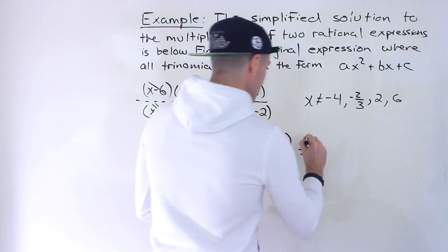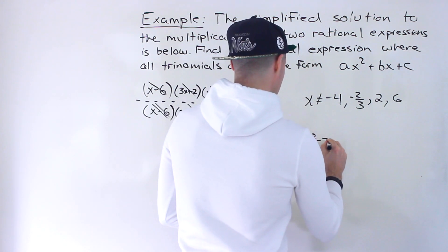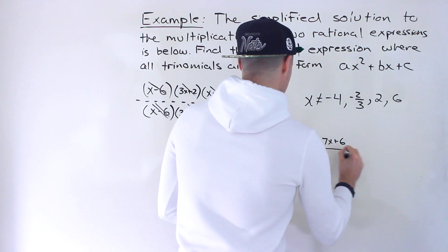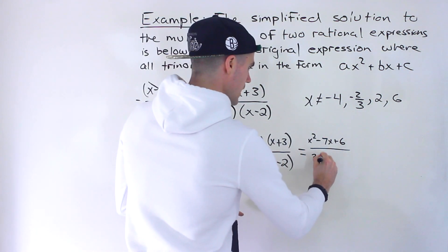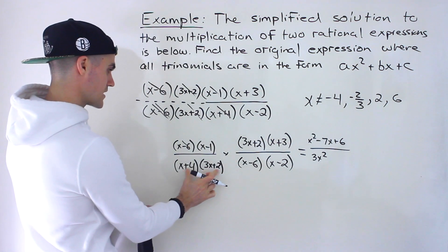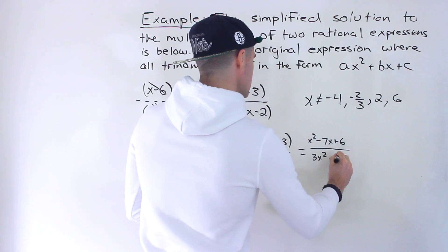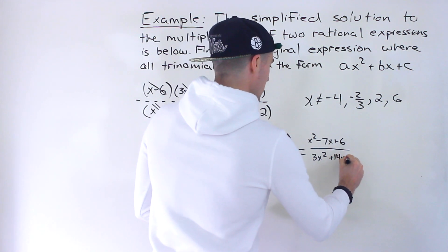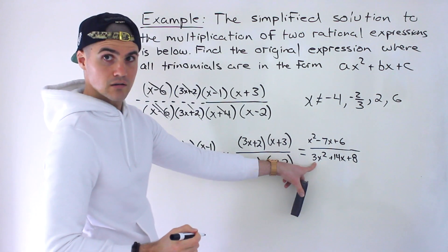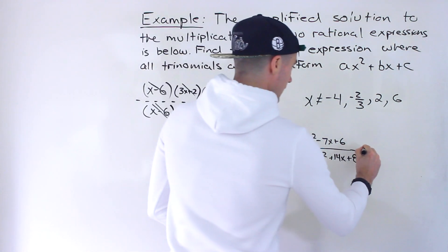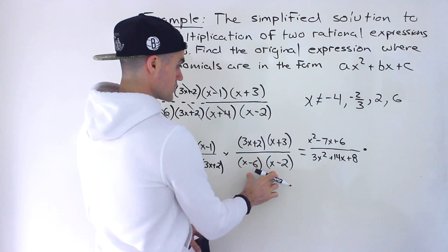Expanding x minus 6 times x minus 1 by FOILing gives x squared minus 7x plus 6. In the denominator, FOILing x plus 4 times 3x plus 2 gives 3x squared plus 12x plus 2x plus 8, which is 3x squared plus 14x plus 8. That's the first rational expression expanded.